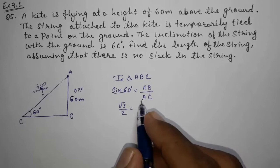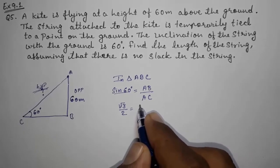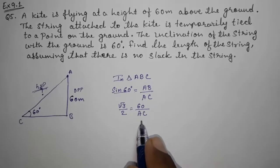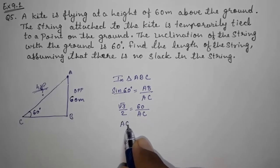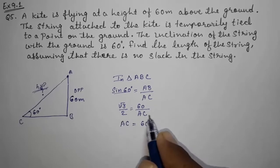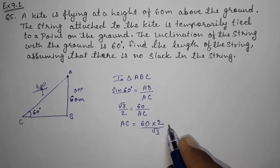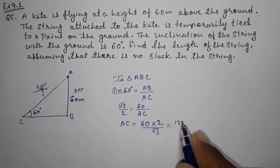Please memorize that. Now AB equals 60 meters. AC, that we want to find out. Now take this 2 and √3 on that side - 2 by √3. So this will become 120 by √3.